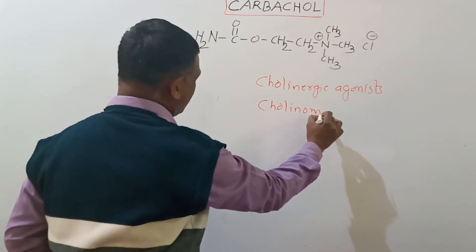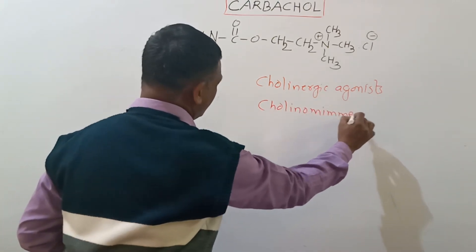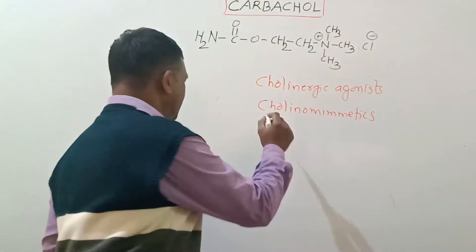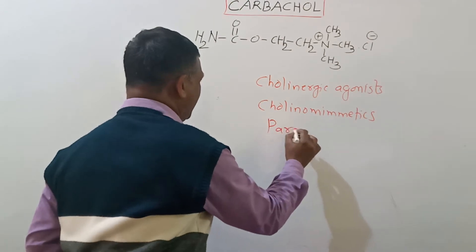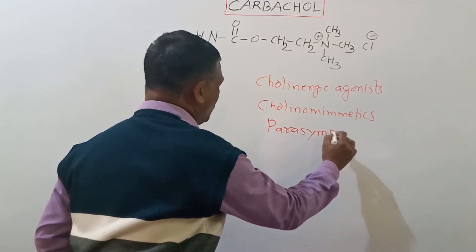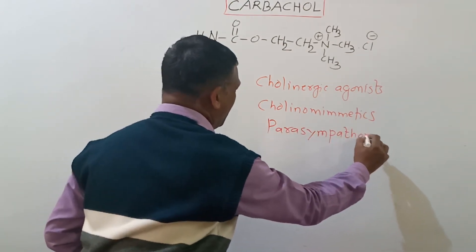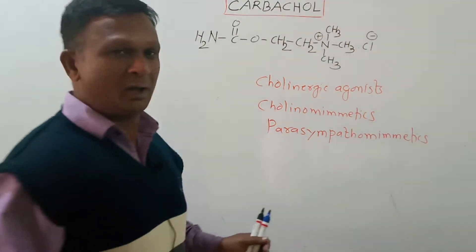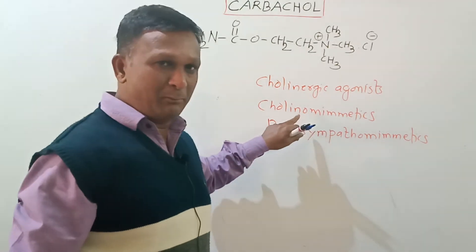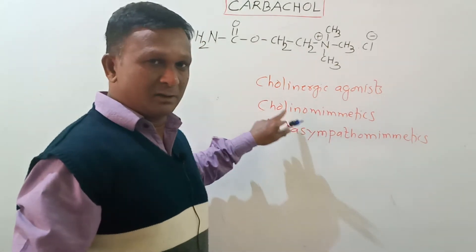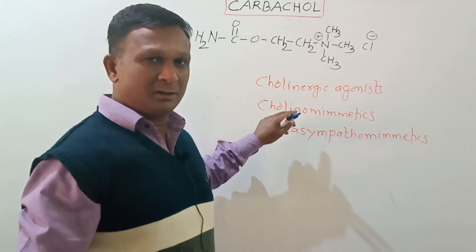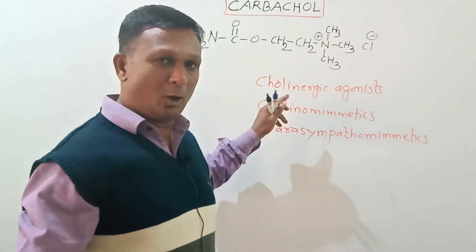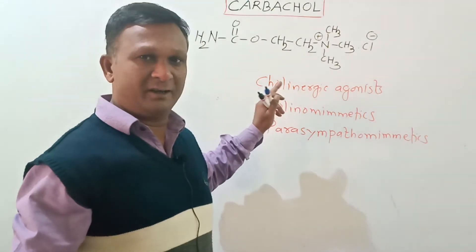These are also called parasympathomimetics. As the name indicates, this drug mimics the action of acetylcholine on its muscarinic receptors.